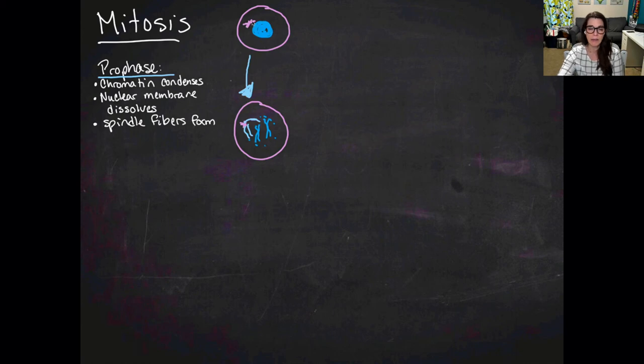During prophase, you'll see the nuclear membrane has divided. I have distinct X's, which are my chromosomes, and these light blue terrible drawings attached to my purple centrioles—those are the beginnings of the spindle fibers. So that is prophase. The next thing that happens is the cell will move to metaphase.